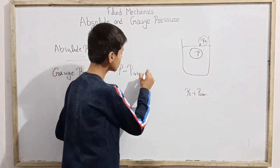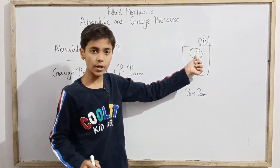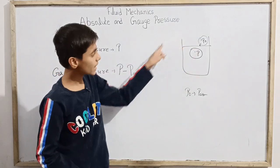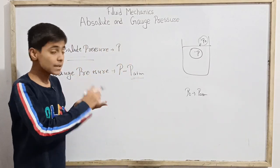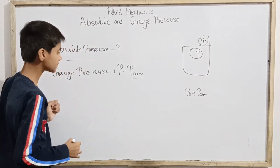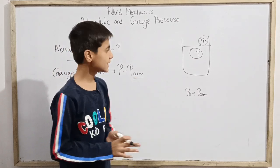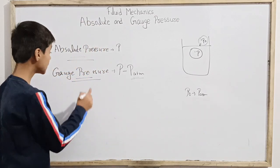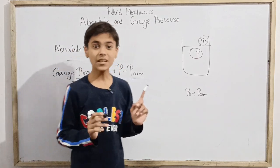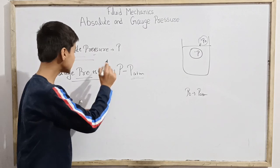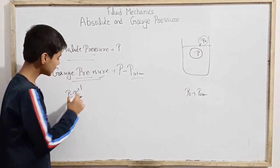That is P minus P atmospheric. Absolute pressure at a point, if I have subtracted pressure in the surrounding, there is only pressure in the atmosphere. So I will get that pressure, P atmospheric, which usually at normal sea level is one atmosphere.